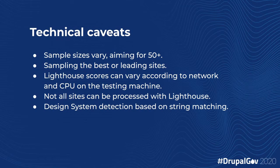Lighthouse scores can vary. We're using virtual machines to run this data. We haven't seen too much variation there, to be fair. Not all sites can be processed with Lighthouse — if there's a problem, they're not included. And finally, our design system detection is just based on string matching around classes and things like that. Your mileage may vary there, but we've done our best.